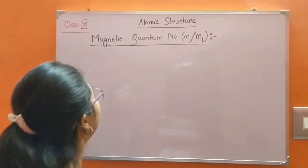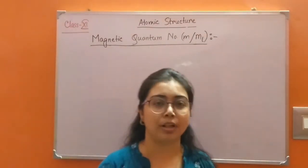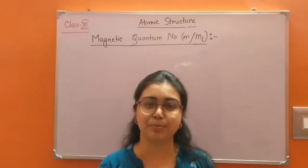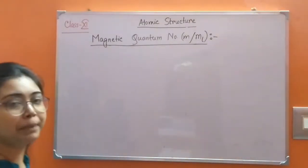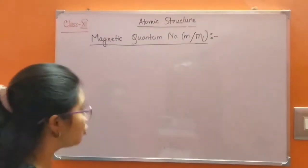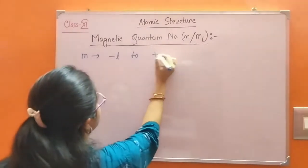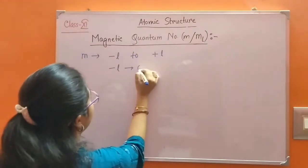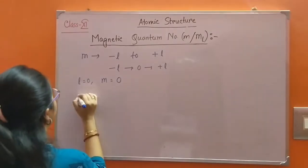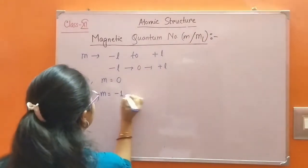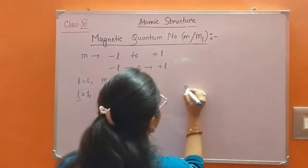Now, magnetic quantum number. Magnetic quantum number is represented by M or ML. This quantum number is very important to explain the Zeeman effect — that is, splitting of spectral lines in the presence of a magnetic field. The value of magnetic quantum number depends upon the value of azimuthal quantum number L. The value of M is minus L to plus L, that means minus L to 0 to plus L. If L equals 0, M equals 0. For L equals 1, M equals minus 1, 0, plus 1. And for a given value of L, M will have 2L plus 1 values.